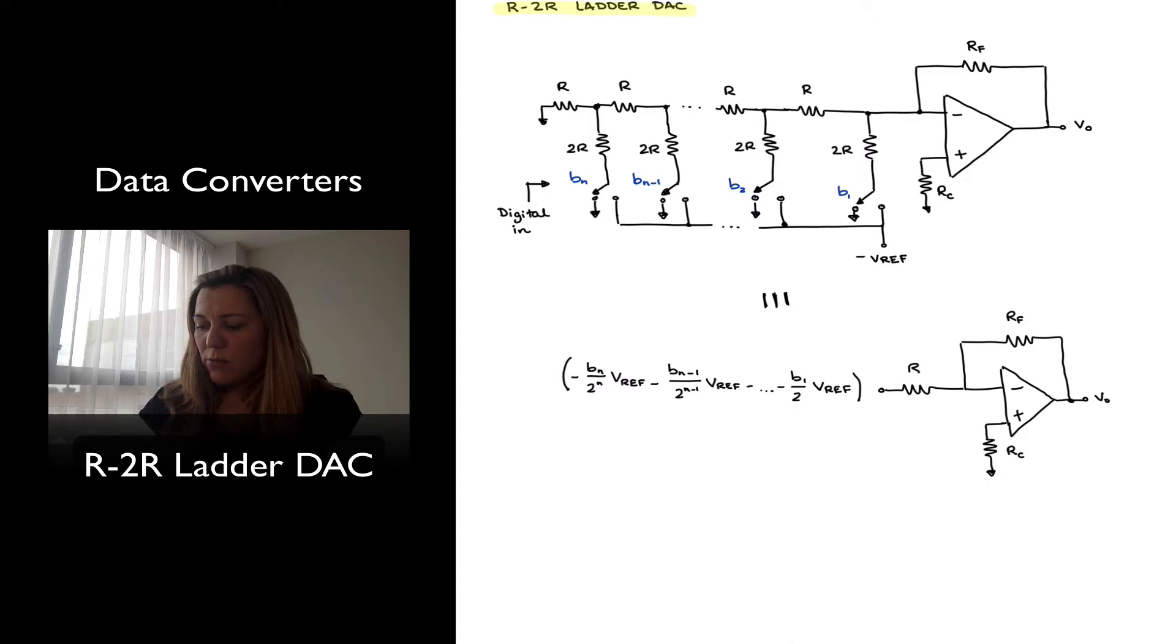Notice that my switches are being controlled by my digital input. My digital input word is in essence B1, B2 all the way through Bn. B1 being my most significant bit again, and Bn being my LSB or my least significant bit.